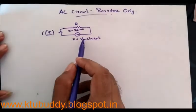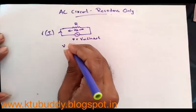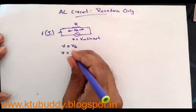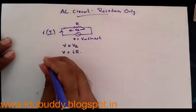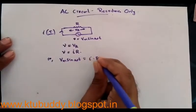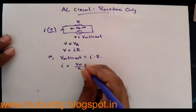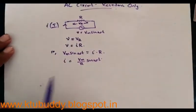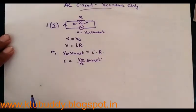According to Kirchhoff's voltage law, the total applied voltage is equal to the drop in the resistor. So the total instantaneous voltage V = I × R, where I is the instantaneous current and R is the resistance. This expression can be modified as: Vm sin(ωt) = I × R, therefore the instantaneous current I = (Vm / R) × sin(ωt). The maximum current occurs when sin(ωt) = 1, or ωt = 90 degrees.